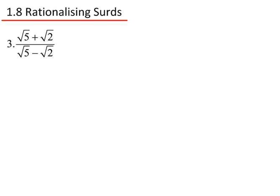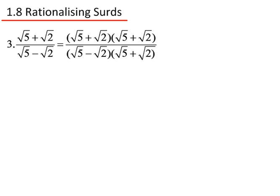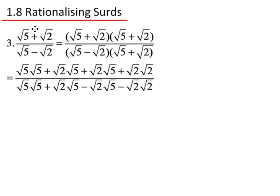Last question: root 5 plus root 2, divided by root 5 minus root 2. I need to multiply the top and bottom by root 5 plus root 2. Multiplying gives me root 5 plus root 2 multiplied by root 5 plus root 2 on top, and root 5 minus root 2 multiplied by root 5 plus root 2 on the bottom. Expanding the top gives root 5 times root 5, plus root 5 times root 2, plus root 2 times root 5, plus root 2 times root 2.